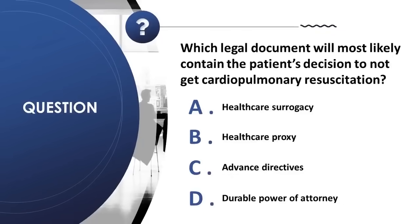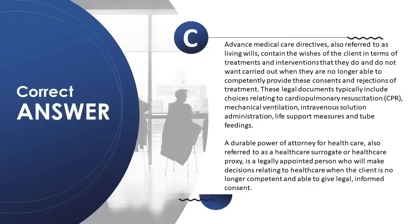Question 28: Which legal document will most likely contain the patient's decision not to get CPR? A) healthcare surrogacy, B) healthcare proxy, C) advanced directives, D) durable power of attorney. Correct answer is C. Advanced medical care directives, or living wills, contain the client's wishes for treatments when they are no longer able to give consent. These include choices about CPR, mechanical ventilation, IV fluids, life support, and tube feedings. A durable power of attorney, also called a healthcare surrogate or proxy, is a legally appointed person who makes healthcare decisions when the client is no longer competent.